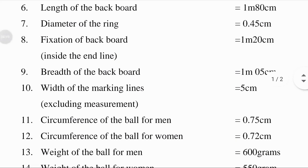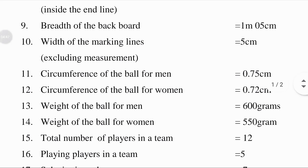Fixation of backboard inside the end lines: fixation means the action or process of fixing. The backboard is an upright board behind the basket of which the ball may rebound. Inside the end lines means the inner side of a line at each end of the court; that is equal to 1 meter and 27 centimeters. Breadth of the backboard means the measurement from side to side; that is equal to 1 meter and 5 centimeters.